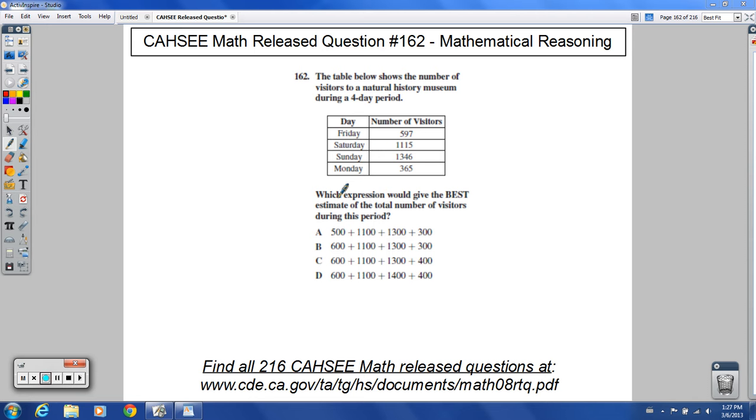Which expression would give the best estimate? It's an estimate, but it's the best one of the total number of visitors during this period. I look at my answer choices here. It appears they've rounded them all off to the nearest hundred, so I'm going to go up here and round them off to the nearest hundred.